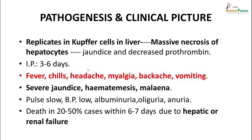In yellow fever pathogenesis, the virus replicates in the Kupffer cells of the liver, producing massive necrosis of hepatocytes leading to jaundice and decreased prothrombin. Incubation period can be 3 to 6 days. Patient presents with fever, chills, headache, myalgia, backache, vomiting. They can have severe jaundice, hematemesis, and melena (passing blood with stools). Pulse is slow, BP is low. The patient can go on to albuminuria, oliguria, and anuria — kidney shutdown can occur. Death can occur in 20 to 50 percent of cases within 6 to 7 days due to hepatic or renal failure.